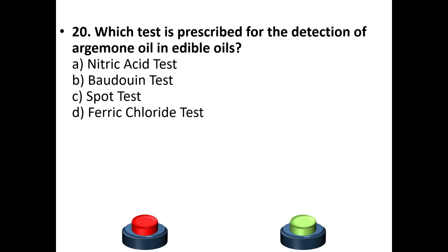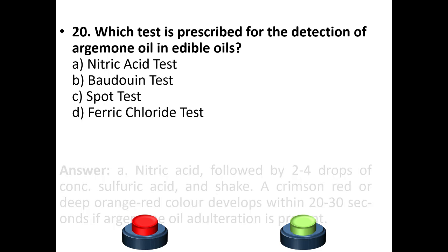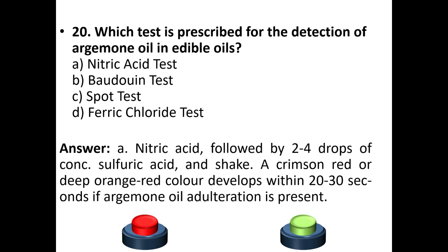Question 20: Which test is prescribed for the detection of argemone oil in edible oils? A. Nitric acid test, B. Baudouin test, C. Spot test, D. Ferric chloride test. The answer is option A: Nitric acid test. The nitric acid test is followed by two to four drops of concentrated sulfuric acid and shaking. A crimson red or deep orange-red color develops within 20 to 30 seconds if argemone oil adulteration is present.